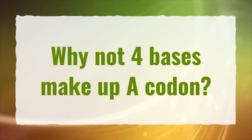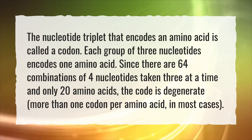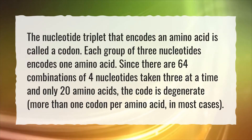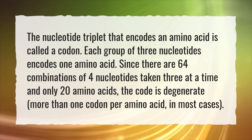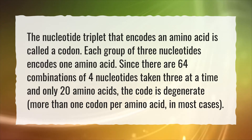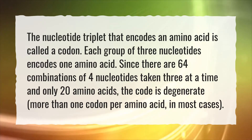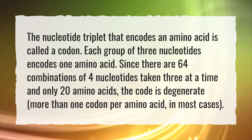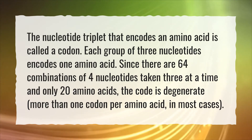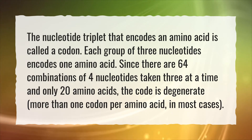Why not four bases make up a codon? The nucleotide triplet that encodes an amino acid is called a codon. Each group of three nucleotides encodes one amino acid. Since there are 64 combinations of four nucleotides taken three at a time and only 20 amino acids, the code is degenerate — more than one codon per amino acid — in most cases.